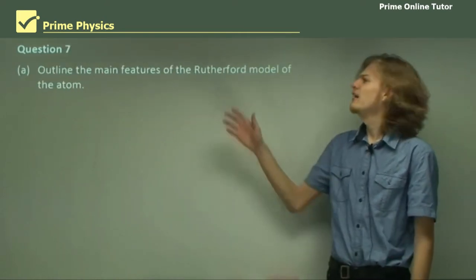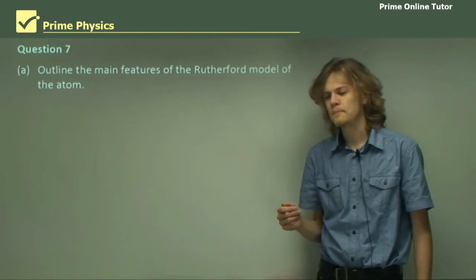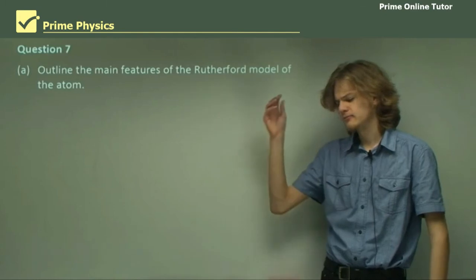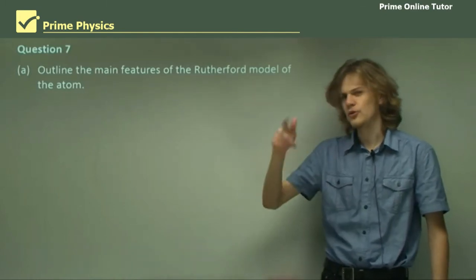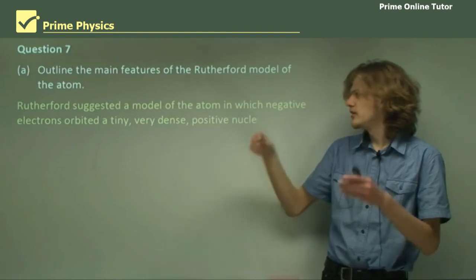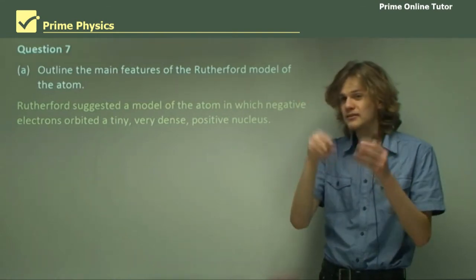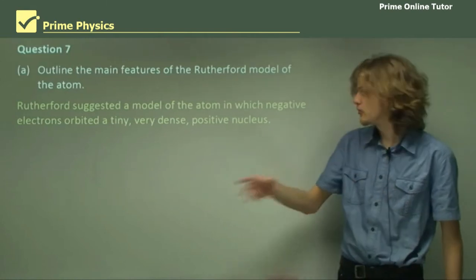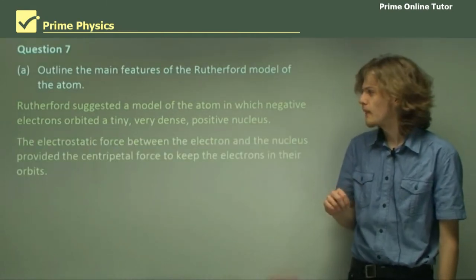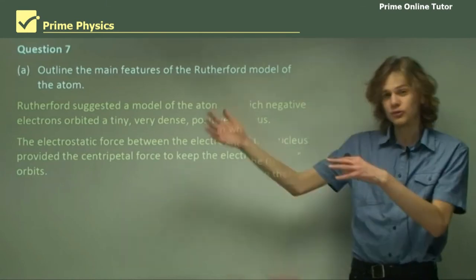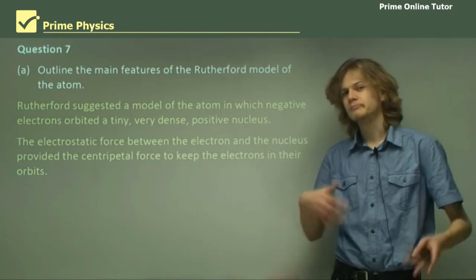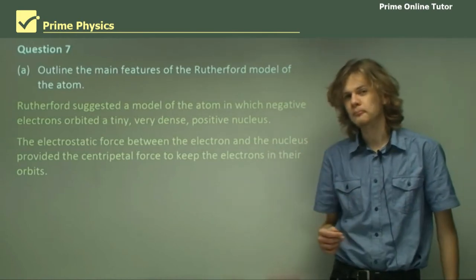Question 7. Outline the main features of the Rutherford model of the atom. Well, let's think about some of the features here. We have a dot in the middle and things going round, right? Rutherford suggested a model of the atom in which negative electrons orbited a tiny, very dense, very heavy, compared to the electrons, positively charged nucleus. The electrostatic force between the electrons and the nucleus is what was causing it to move in the circle around the nucleus. So, it's a little like planets orbiting a sun in a solar system.